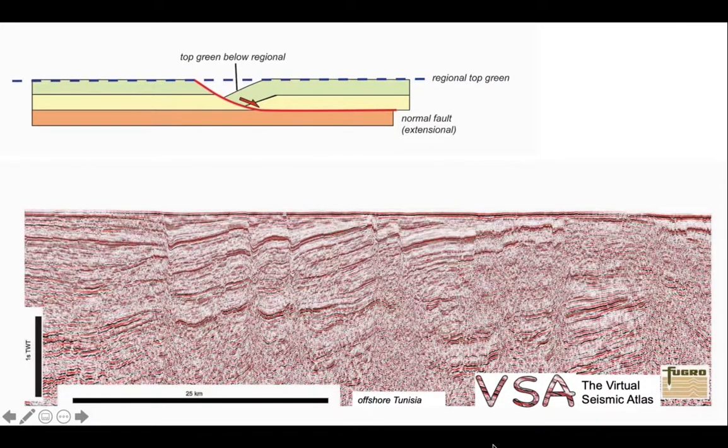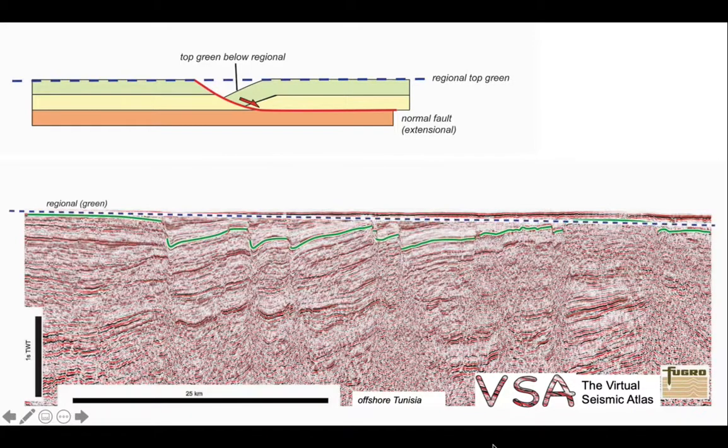Let's go back to the seismic example we started this presentation with, which actually comes from offshore Tunisia. Let's draw back on our green horizon through there and its regional. And we can see that the green horizon has been dropped below its regional in the fashion picked up by these yellow arrows. So therefore, we would forecast that the structural style here involves normal faulting.